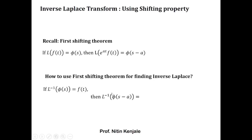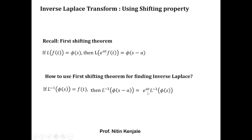So if you are given a function φ in terms of (s − a), then its inverse Laplace transform can be calculated as follows. We first write e^(at) outside the inverse Laplace, so we have e^(at) · L⁻¹{φ(s)}. This φ(s) can be obtained from φ(s − a) by replacing every (s − a) term with s.